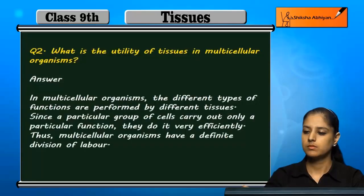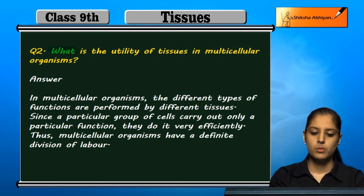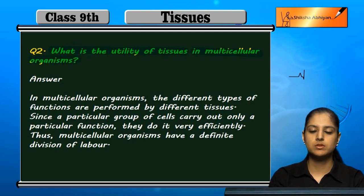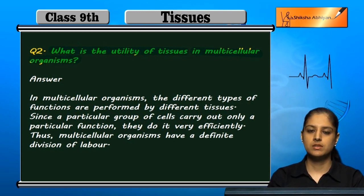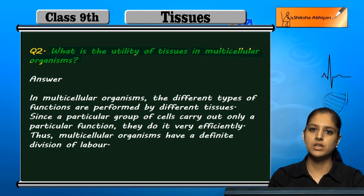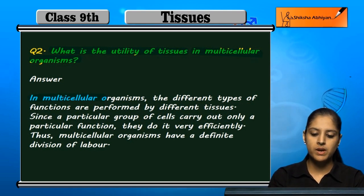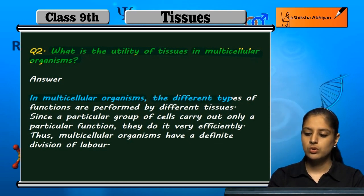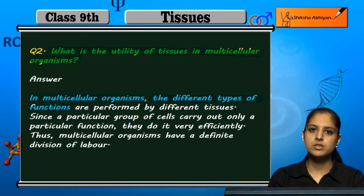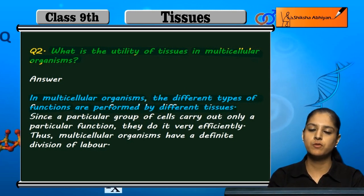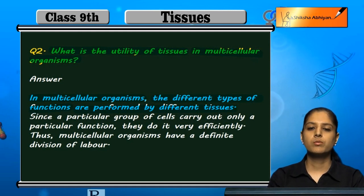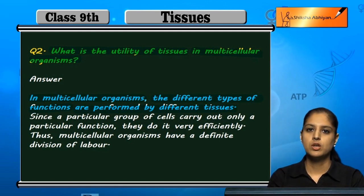Question 2: What is the utility of tissues in multicellular organisms? Multicellular organisms have many cells that perform different types of functions, and they have different types of tissues because the cells are grouped into a tissue, and in the body there are many functions carried out by different types of tissues.